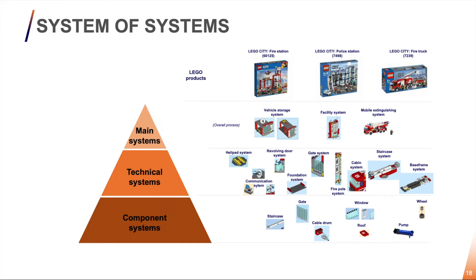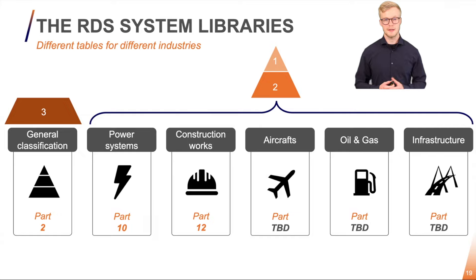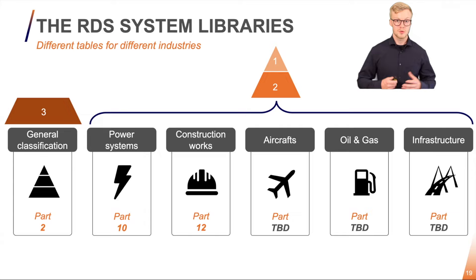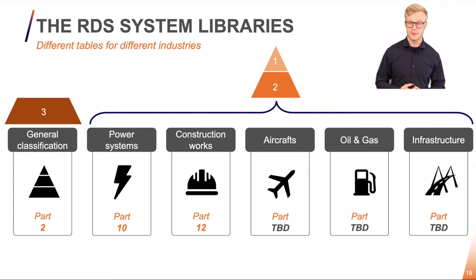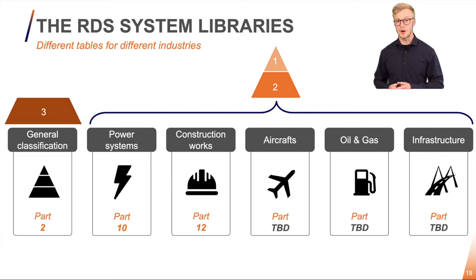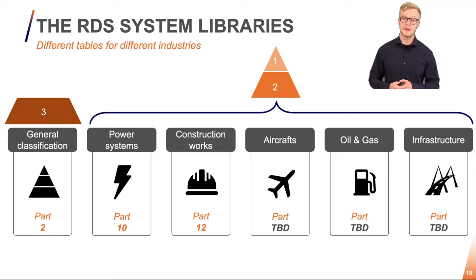The current landscape for the RDS 81346 standard looks like this. We have part 2, which contains the component system classifications I mentioned earlier. The main systems and technical systems — the 1 and 2 letter codes — are defined in each of their own parts. For example, from the power systems point of view, we find the classifications for main systems and technical systems in part 10. From the construction work point of view, we find the classification in part 12. There are also plans to make the same kinds of classifications for the aerospace industry, oil and gas, and the infrastructure industry.